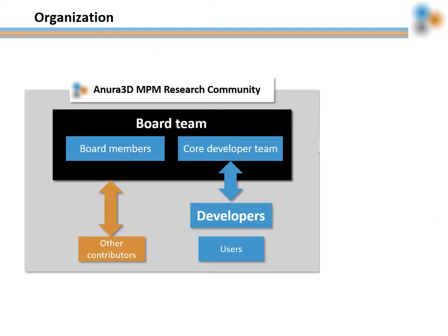The Anura3D MPM research community has a board team formed by board members and core developers. Board members are key or historical members in charge of the management of the community. They also ensure a fruitful collaboration among different research groups and suggest new research lines. The core developers have a deep knowledge of the Anura3D software and are responsible for its development and maintenance. In addition, there is a group of developers, usually researchers and PhD students, that together with the core developer team implement and test new features, maintain and improve the code, and also the reference documentation. Within the different research groups in the community, there are Anura3D users that report bugs and suggest improvements or developments, most commonly masters students within these institutions.